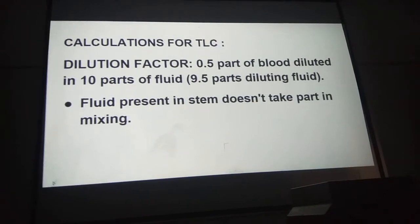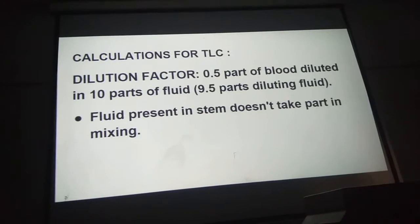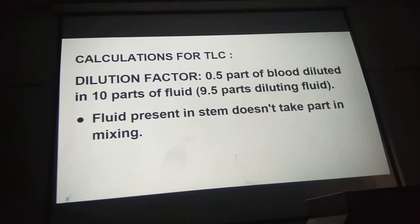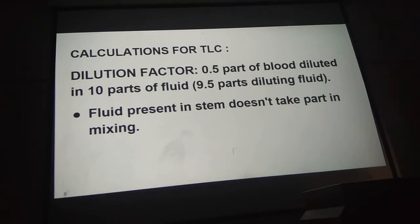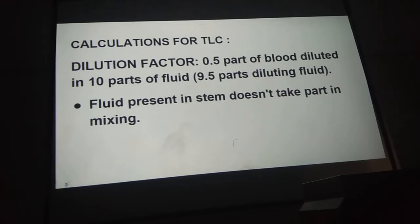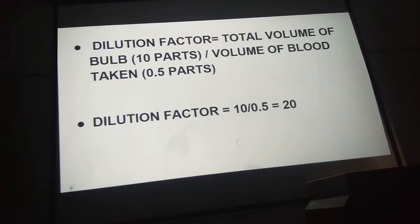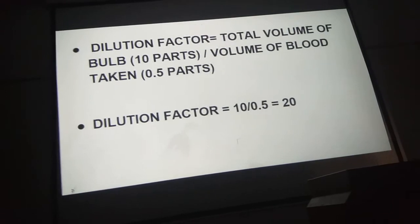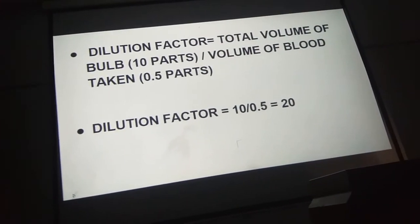We took the blood in the WBC pipette up to mark 0.5 and then took the Turk's fluid up to mark 11. So 0.5 parts of blood is diluted in 10 parts of fluid, or 9.5 parts of diluting fluid. The fluid present in the stem does not take part in the mixing. The dilution factor is calculated as total volume of bulb (10 parts) divided by volume of blood (0.5 parts), giving a dilution factor of 20.